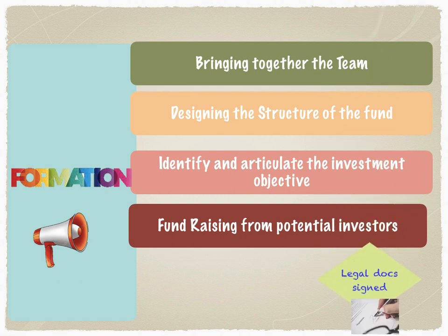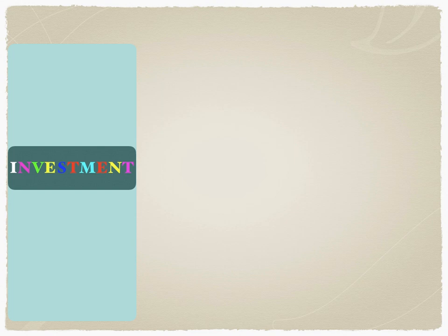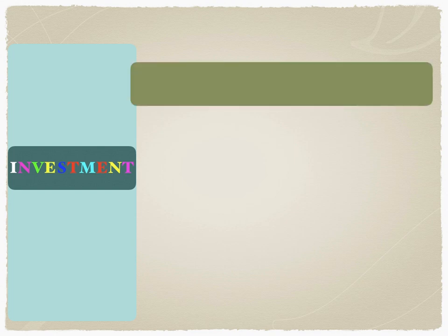The formation stage must be followed by signing of legal documents between the general partner and the limited partners. There's normally one GP and about four to five LPs. Funds with two GPs and 12 LPs have struggled to keep LPs satisfied in terms of information flow, processing, and accounting standards — so funds tend to keep the maximum number of LPs to no more than seven or eight. Once the legal documents are signed, capital flows from the LPs into the pool, the fund is formed, and then starts the investment phase.